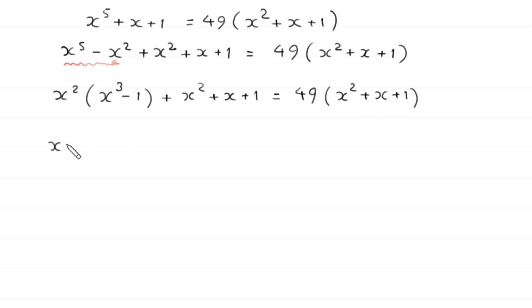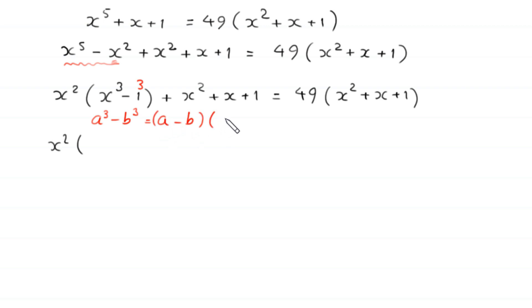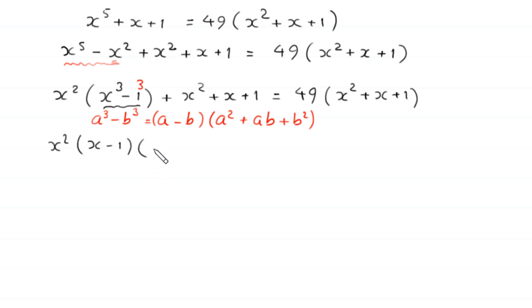From the two terms x to the power 5 minus x squared, we can factor out x squared, giving x squared times x cubed minus 1. Plus the expression x squared plus x plus 1, is equal to 49 times x squared plus x plus 1. Now, x cubed minus 1 is the same as x cubed minus 1 cubed, so by using the algebraic identity a cubed minus b cubed equals a minus b times a squared plus ab plus b squared, this becomes x minus 1 times x squared plus x plus 1.